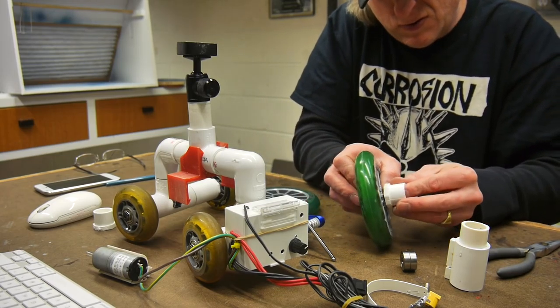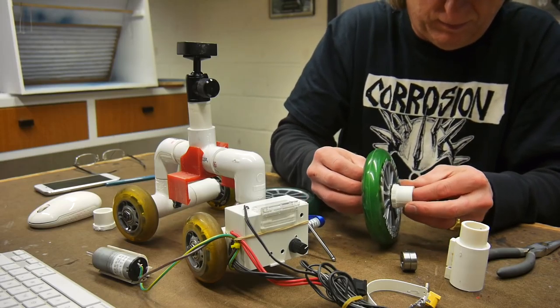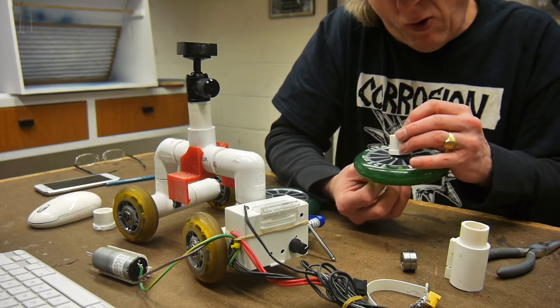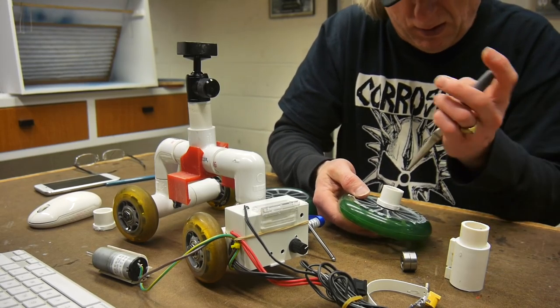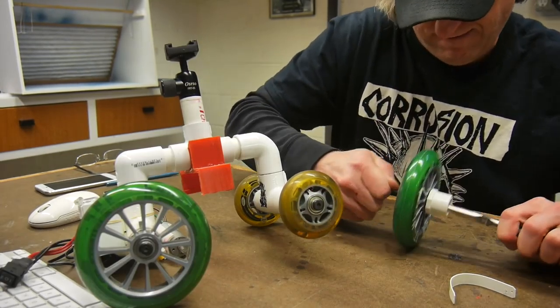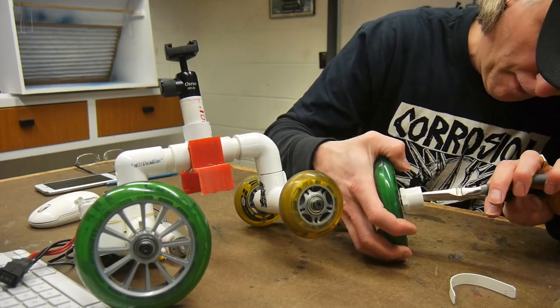The original wheels are from some rollerblades. I think they're about 71 or 72 millimeters. These new ones are pretty big. They're from like a scooter. They're 125 millimeter diameter, so they're really big, makes the whole unit look like a little hot rod.